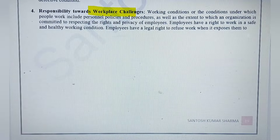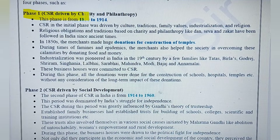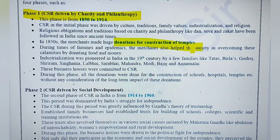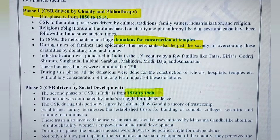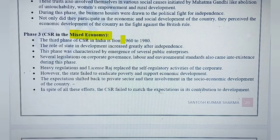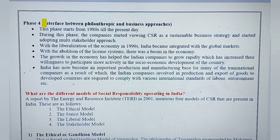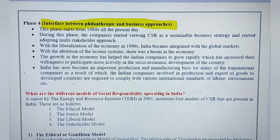Explain the different phases of CSR development in India. Phase one was from 1850 to 1940, where charity and philanthropy were in practice. Phase two was from 1940 to 1960, with more importance given to social development. Phase three was a mixed economy period from 1960 to 1980. Phase four was the interface between philanthropic and business approaches. These phases need to be properly expanded in your answer.